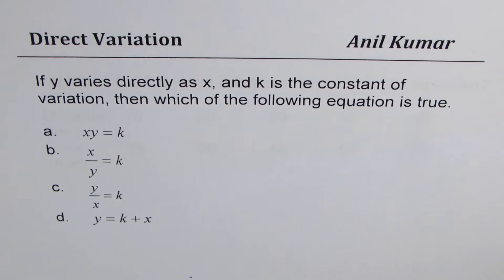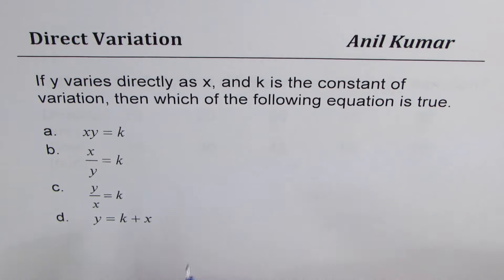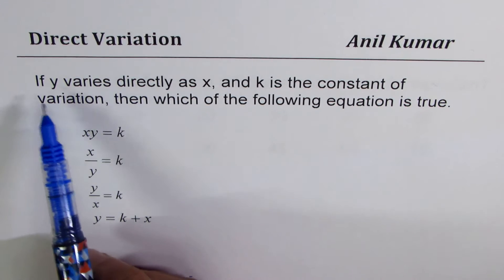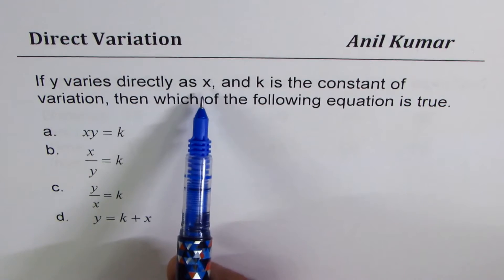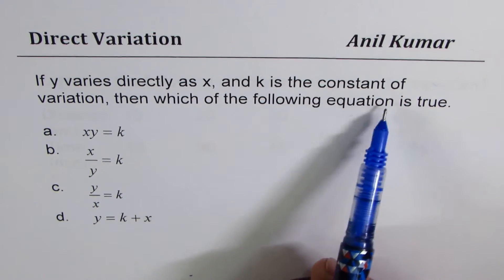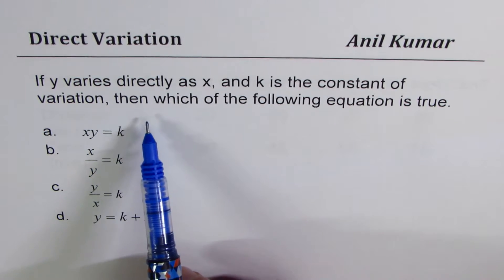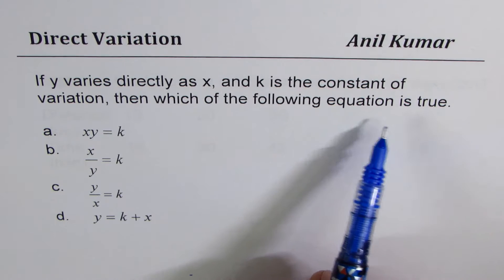I'm Anil Kumar sharing with you a few questions on direct variation. Here's the first one. It says, if y varies directly as x and k is constant of variation, then which of the following equation is true?